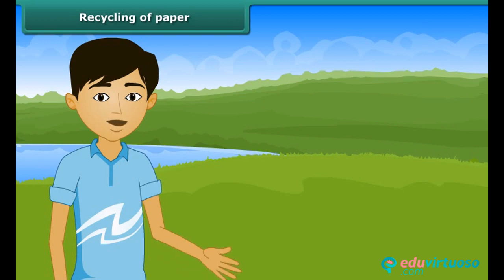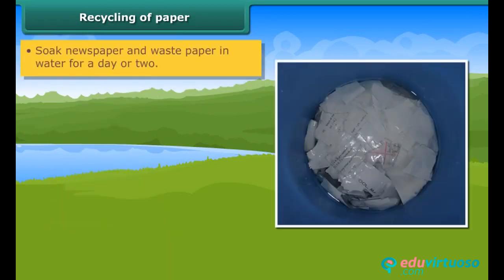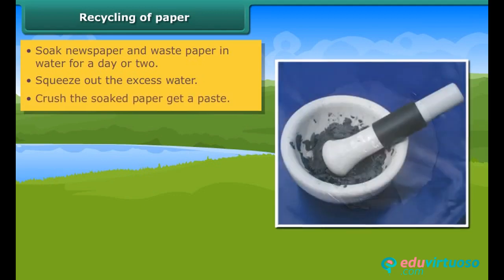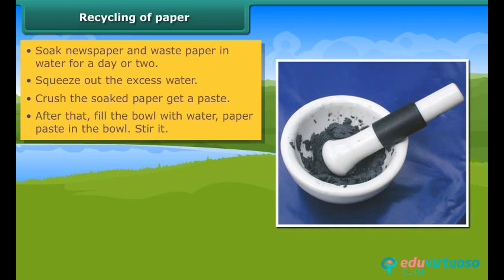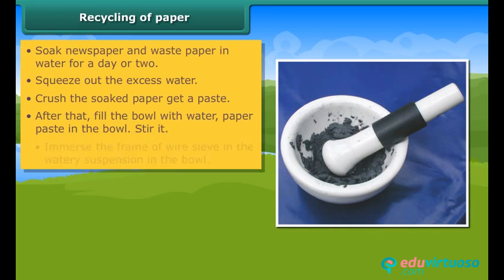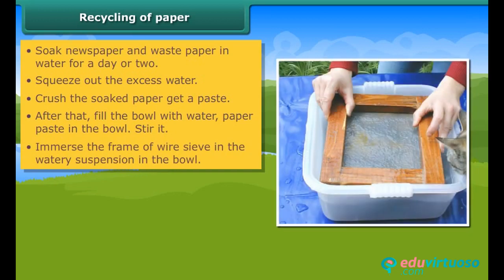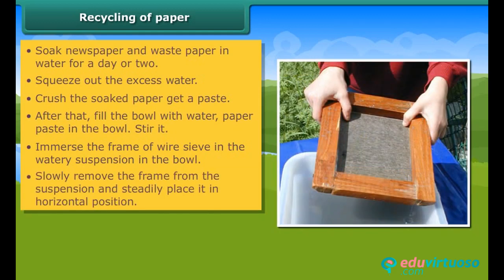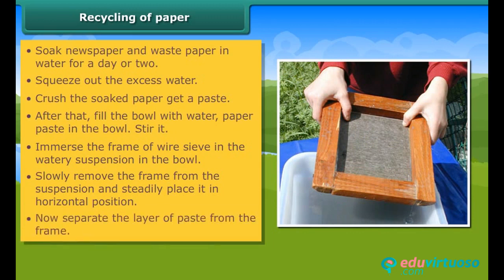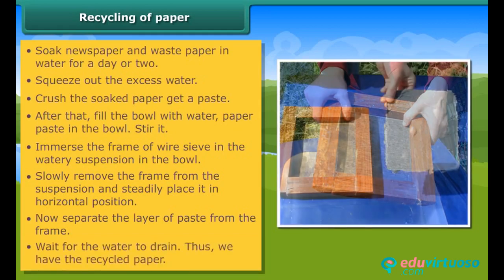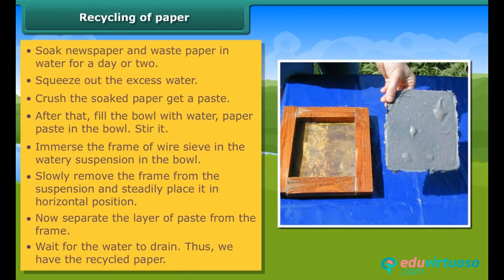The steps involved are: soak newspaper and waste paper in water for a day or two; squeeze out the excess water; crush the soaked paper to get a paste. After that, fill the bowl with water, add the paper waste and stir it. Immerse the frame of wire sieve in the watery suspension in the bowl. Slowly remove the frame from the suspension and steadily place it in a horizontal position. Separate the layer of paste from the frame and wait for the water to drain. Thus we have the recycled paper.